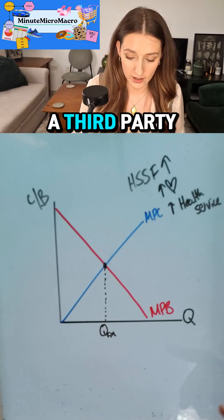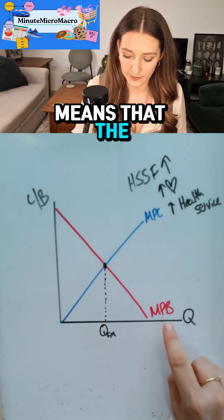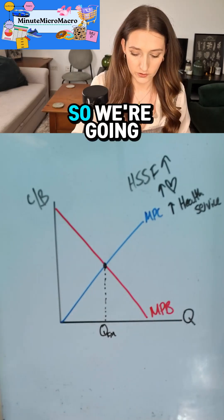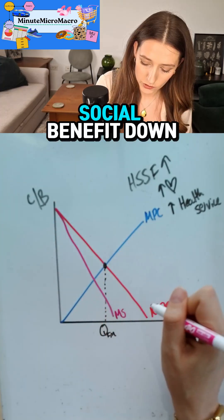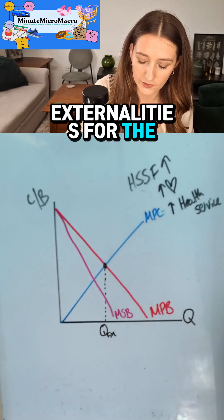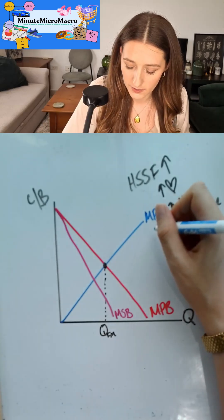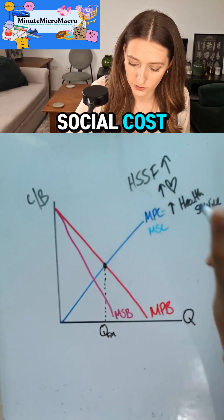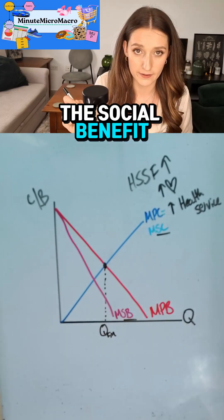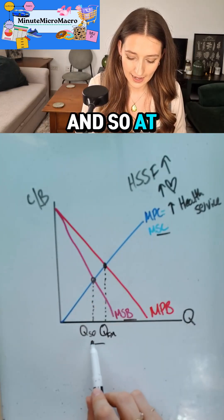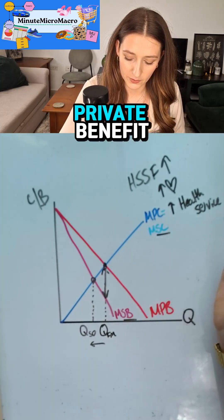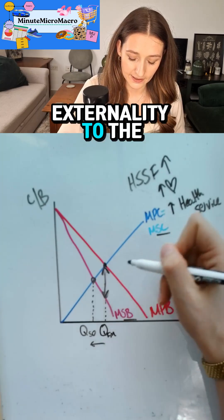If we were consuming food in a sterile environment with no costs or benefits to any other person, we might consume at QFM, the free market quantity. However, when there is a cost to a third party because of our choices, the benefit for society is lower than the private benefit. So we draw a marginal social benefit below the marginal private benefit, and we assume there are no negative externalities for the production of crisps, chocolate, or takeaways, so marginal social cost equals marginal private cost.